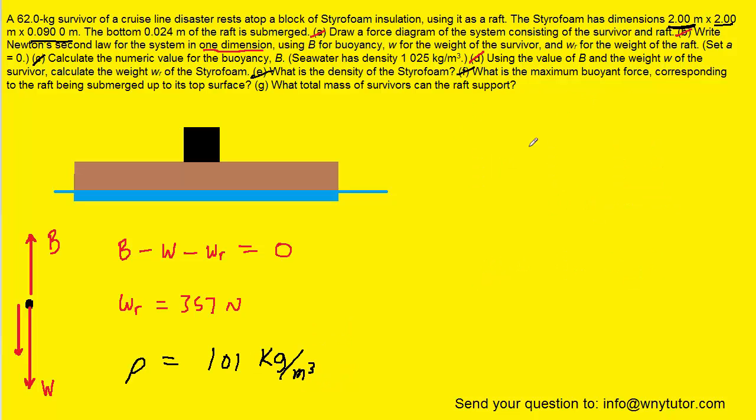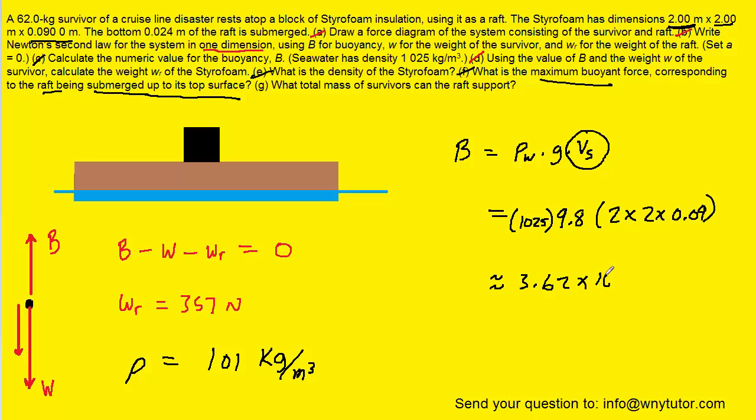For part F, to get the maximum buoyant force, we return to the buoyant force equation, which is the density of the water times g times the volume of the submerged portion of the object. And in order to get the maximum buoyant force, the question notes that the raft would have to be entirely submerged up to its top surface. So when we plug in for the volume of the submerged portion, we're going to use the entire volume of the raft. We're going to use the 2 by 2 by 0.09. That would correspond to the entire raft being submerged. g is 9.8, and then the density of water again was the 1,025. When we work this out, we get roughly 3.62 times 10 to the third. And the unit here would be Newtons.